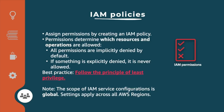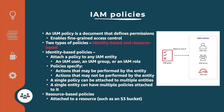You should follow the principle of least privilege — an important concept when configuring IAM. Because IAM is a global service, settings applied in one region are also implemented in other regions. There are two types of policies: identity-based policies (assigned to users or groups of users) and resource-based policies (assigned to a resource so another service can access it). An IAM role is an IAM identity with specific permissions, similar to an IAM user with an attached permission policy. Unlike an IAM user, a role is not uniquely associated with one person — it can be assumed by a person, application, or service, and provides temporary security credentials.